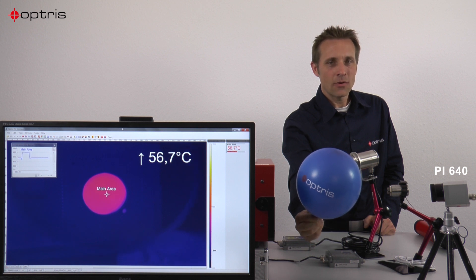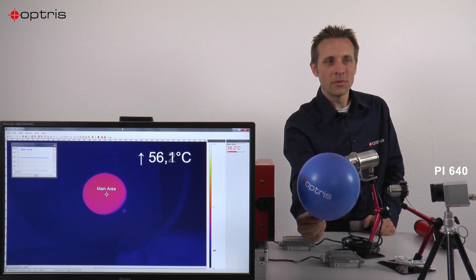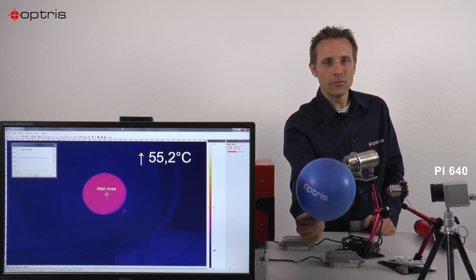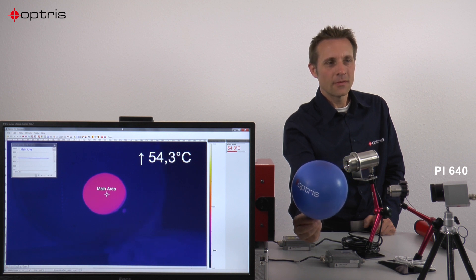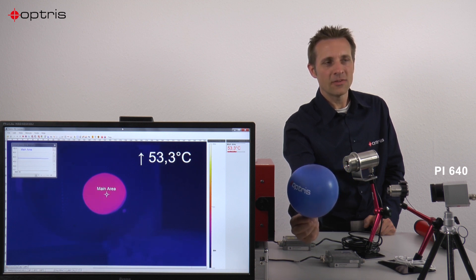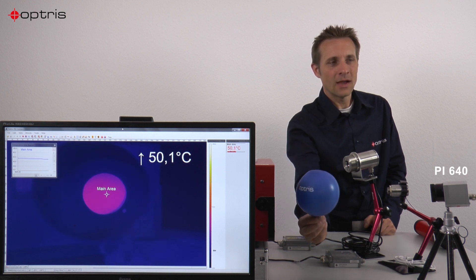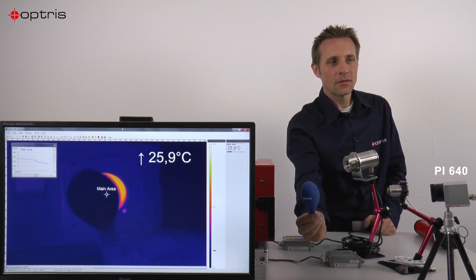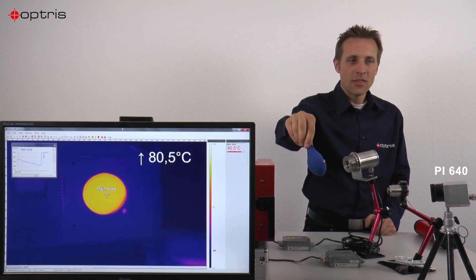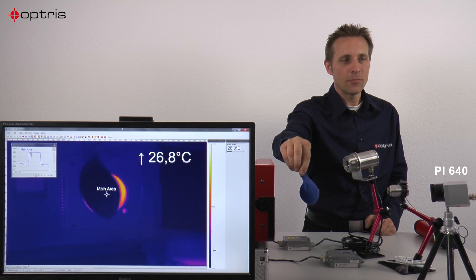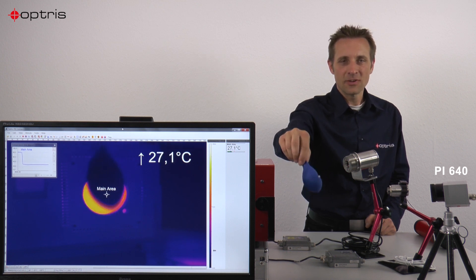If I now push out the air of the balloon, you can see that the transmissivity will be lower, because the thickness of the balloon is increasing. So you can see that the transmissivity will be lower and lower, and in the end the balloon is thick enough that we can measure the correct temperature of the balloon, which is 26 degrees C.